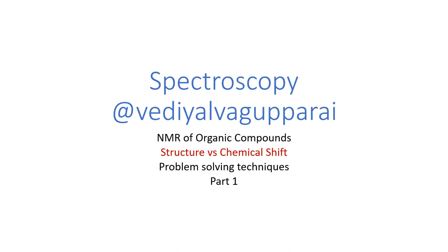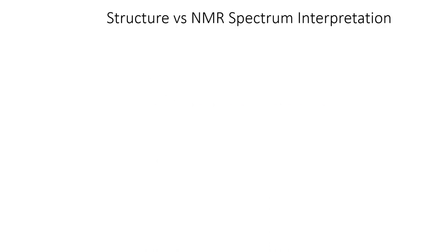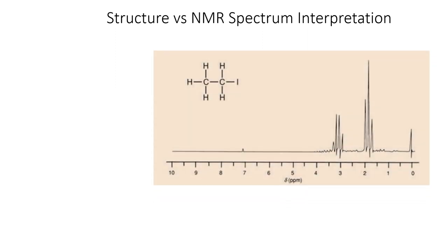Welcome to spectroscopy. Today we will look at structural elucidation using NMR spectrum — the problem-solving techniques for synthetic problems. So, structure versus NMR spectrum: given an NMR spectrum, we determine the structure from the NMR splitting pattern. We use various methods. First and foremost, let us understand the NMR spectrum.